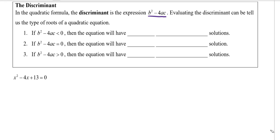If the discriminant b squared minus 4ac is less than 0, so if it's negative, we're going to have two complex solutions. If b squared minus 4ac equals 0, then we're going to have one real solution. And if b squared minus 4ac is positive, so greater than 0, we will have two real solutions.